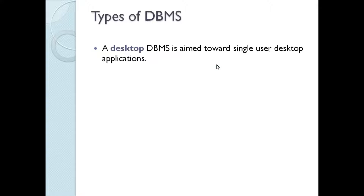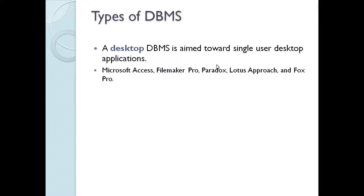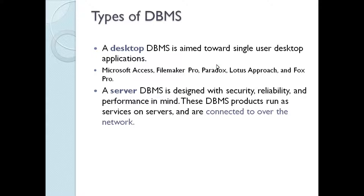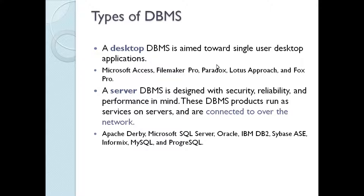Types of DBMS: there are broadly two types — desktop DBMS and server DBMS. A desktop DBMS is aimed towards single-user desktop applications; examples are Microsoft Access, FileMaker Pro, Paradox, Lotus Approach, and FoxPro. A server DBMS is designed with security, reliability, and performance in mind. These products run as services on servers and are connected to over the network. Examples are Apache Derby, Microsoft SQL Server, Oracle, IBM DB2, Sybase, Informix, MySQL, and Progress SQL.